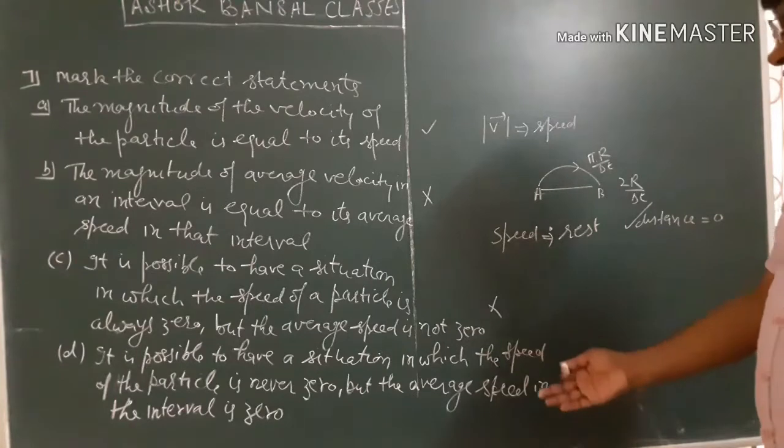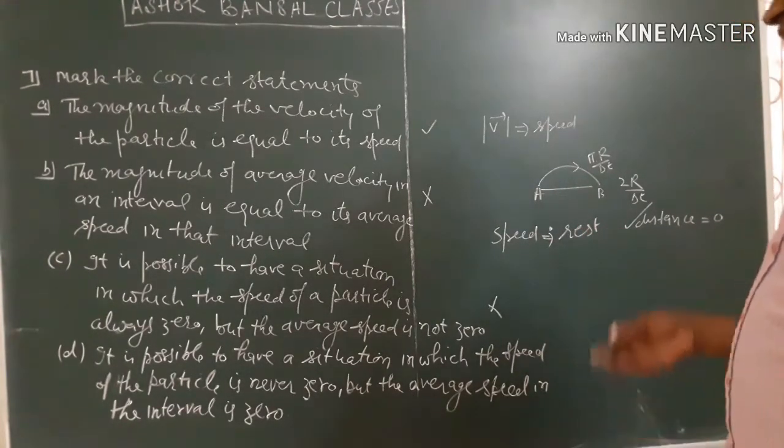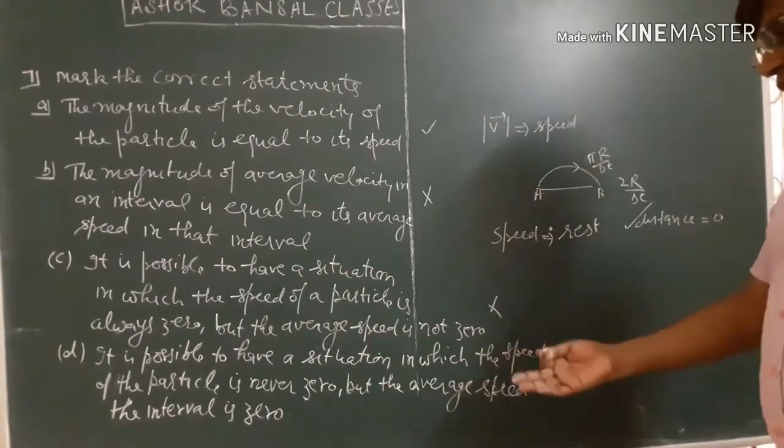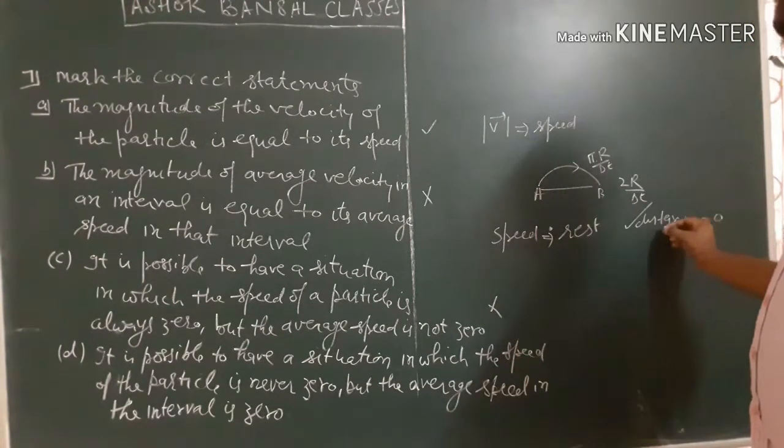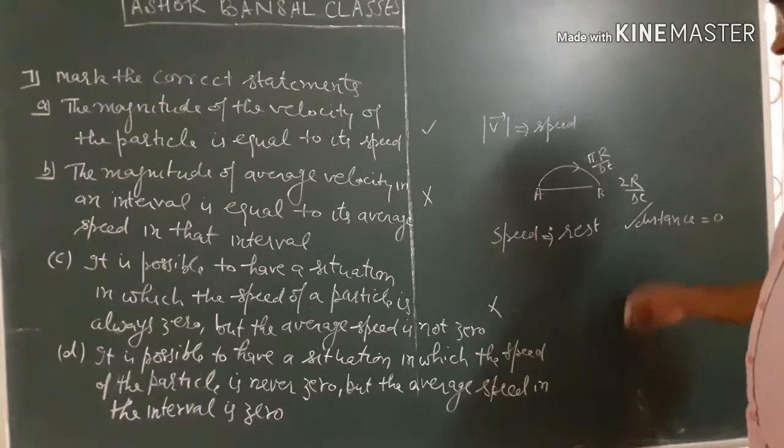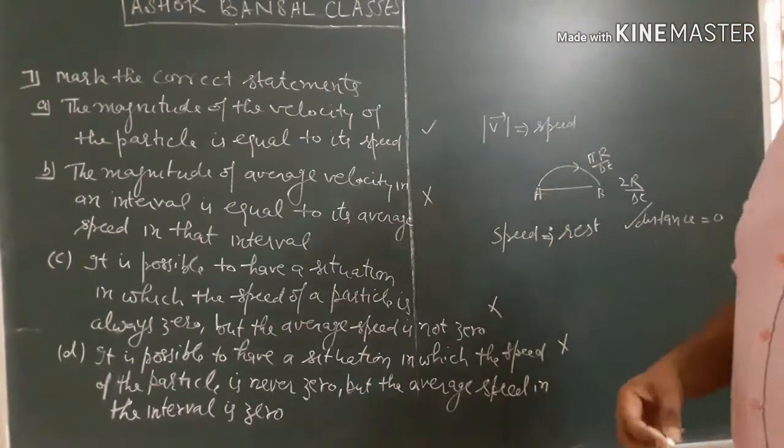This situation is not possible in which the speed is 0 and the average speed is not 0. If the speed is 0, the distance is 0. If the distance is 0, the speed is 0. This is wrong. The answer is E.